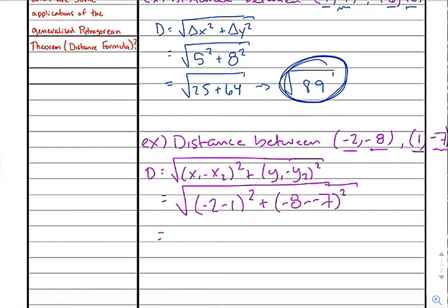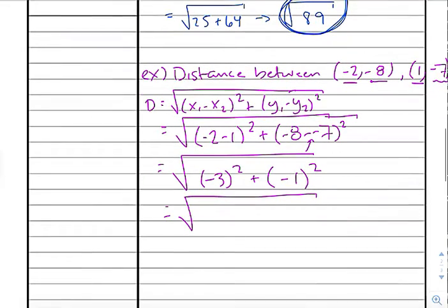So, simplifying it further, negative 2 minus 1 is negative 3, and we'll square that in a moment. These two negatives become a positive, so that's negative 8 plus 7. That's negative 1 squared up. Okay. So, squared values will stay positive. That's why we're able to drop the absolute value beforehand. So, 3 squared will be 9. Negative 1 squared will be 1. So, it's actually just the square root of 10. Okay.